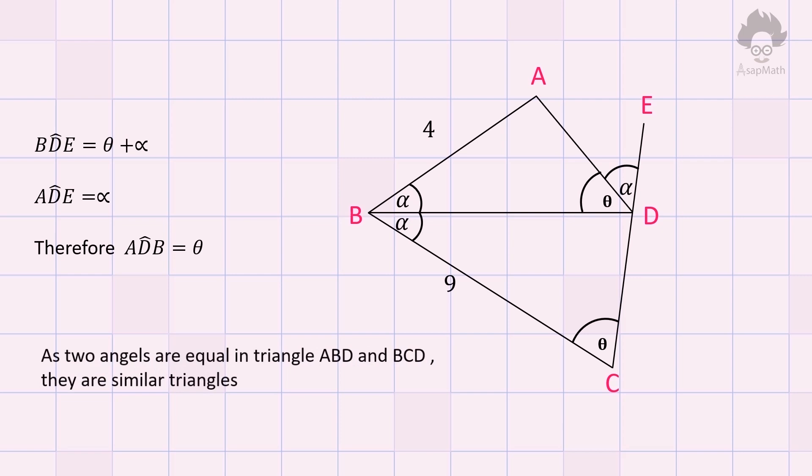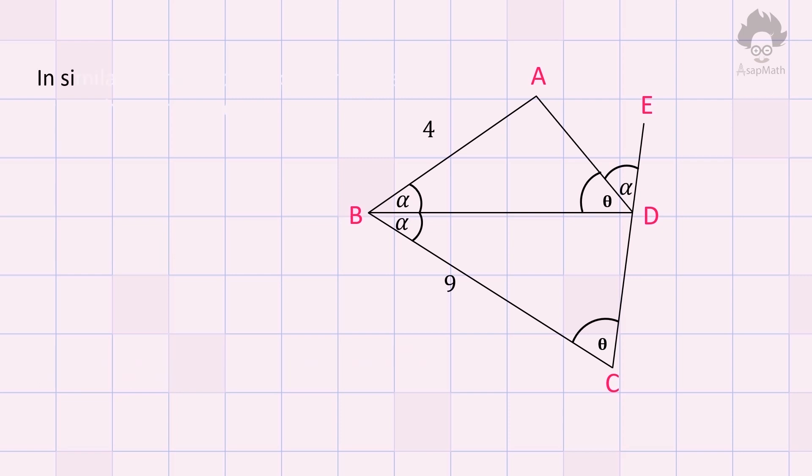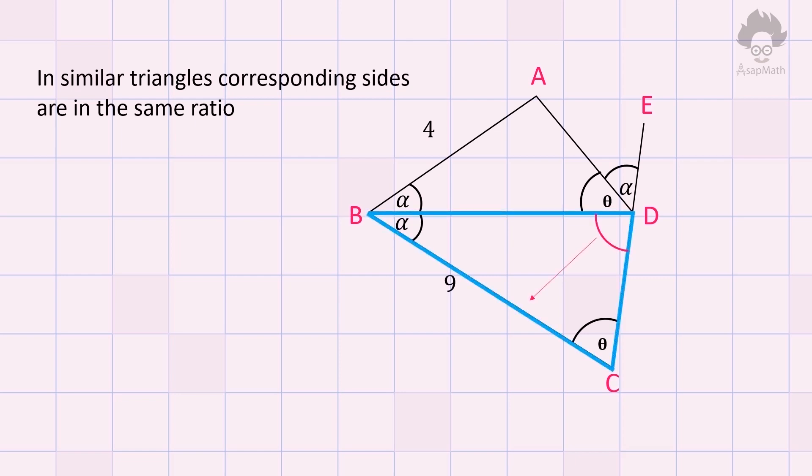When similar triangles are considered, we know that corresponding sides are in the same ratio. The side opposite to unknown angle in BCD is 9, and the side opposite to unknown angle in ABD triangle is BD. Another pair of corresponding sides are 4 and BD, which are opposite sides of angle theta in two triangles.